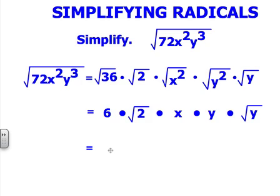So our final answer, we're going to multiply the 6xy all together, and then we're going to multiply the radicands together, 2 and y.